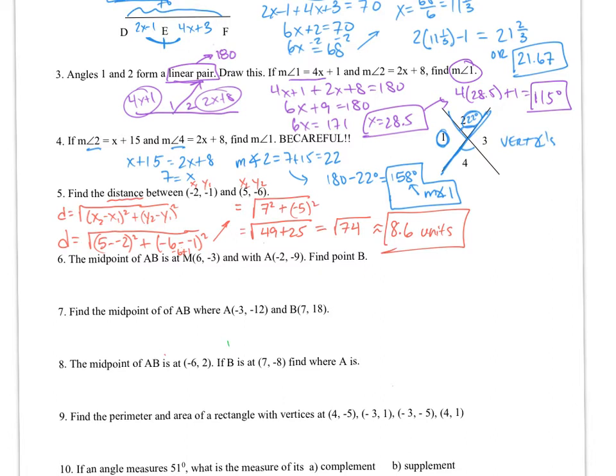Moving on to number 6, the midpoint of AB is that value right there. If you take a look at a segment, this is the value of the midpoint, which is 6, negative 3. They give me point A at negative 2, negative 9, and I need to find that point B. So I know the midpoint, but I don't know this endpoint B.